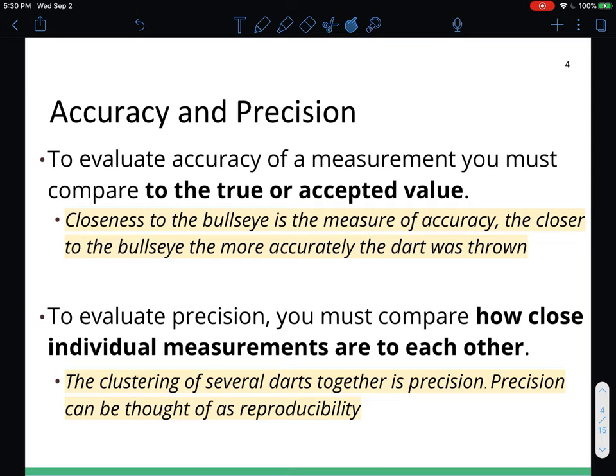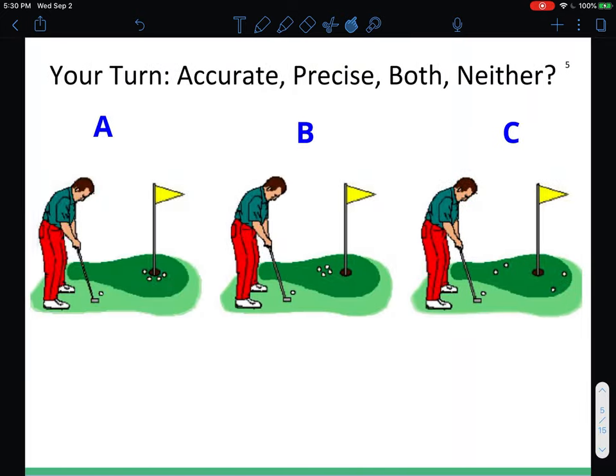Let's get one more practice problem with identifying accuracy and precision. This time we are switching to golf. You have a question pop up very shortly and once you decide what is happening, is this person accurate, precise, or neither or both when they are playing golf in the three different scenarios.